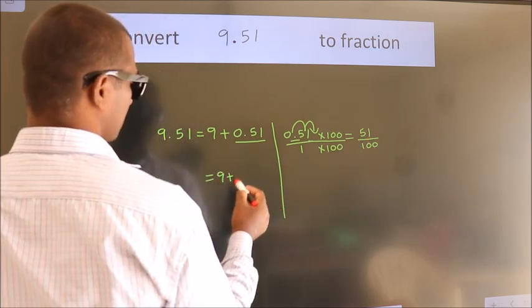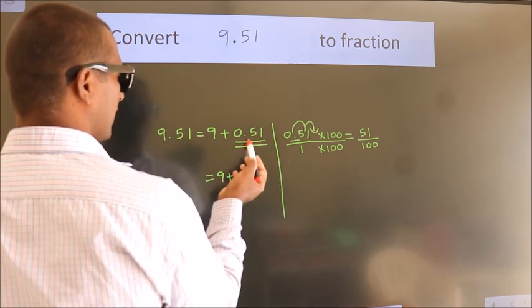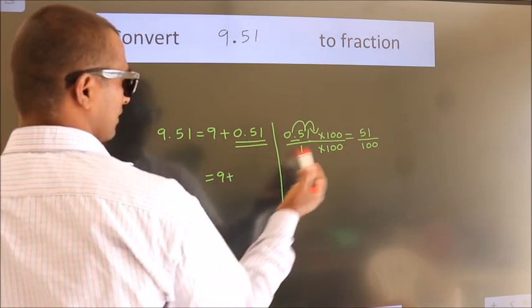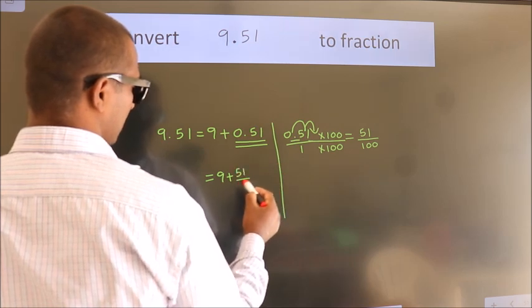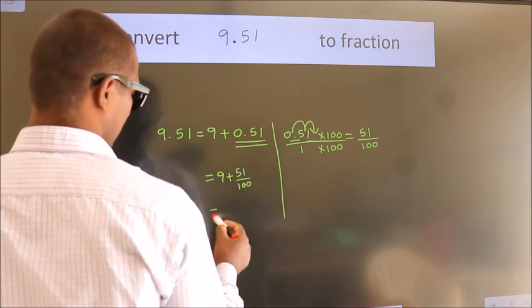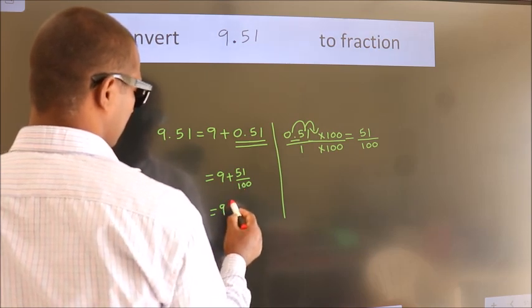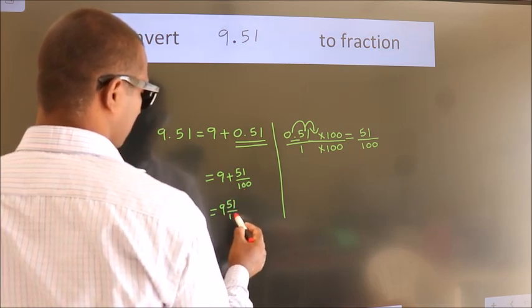9 plus, in place of 0.51, now we write this fraction 51 by 100. 9 plus 51 by 100. In mixed fraction it is 9 51 over 100.